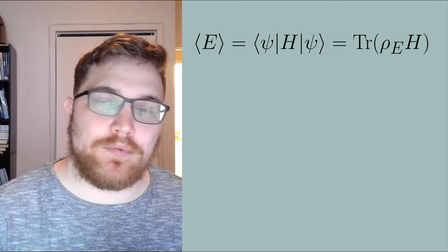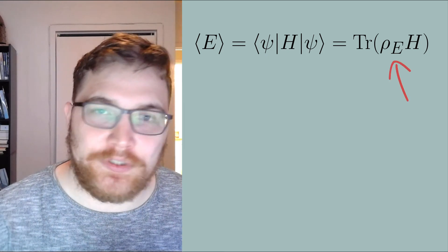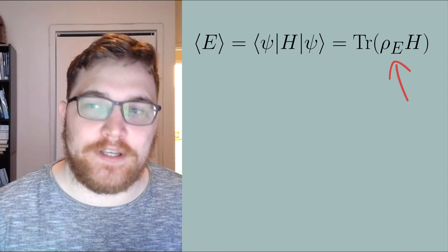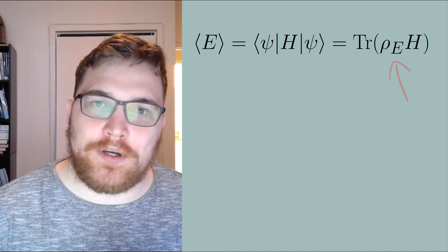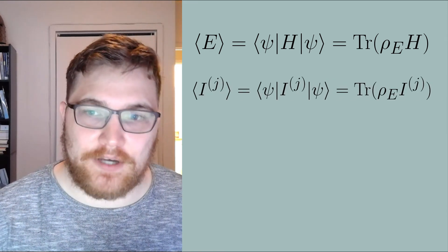If my system reaches equilibrium, we know that the equilibrium state will need identical energy to our initial state, so it must obey the following equation where we have called the equilibrium state rho subscript e. But this isn't the only integral of motion. Energy is not the only thing conserved in our system.